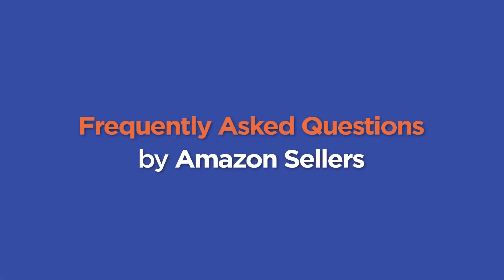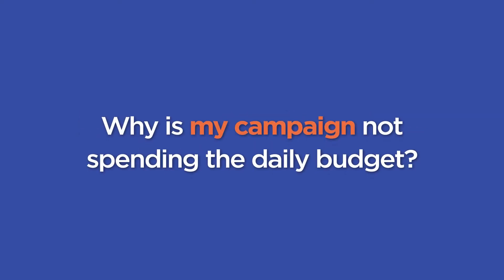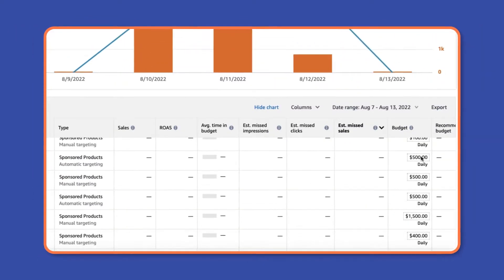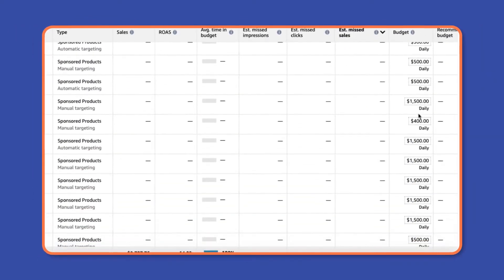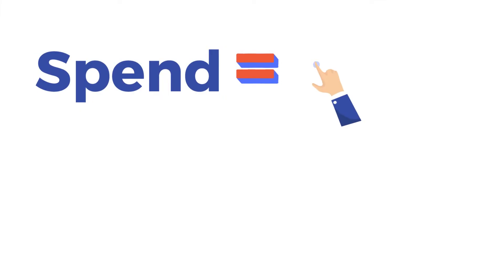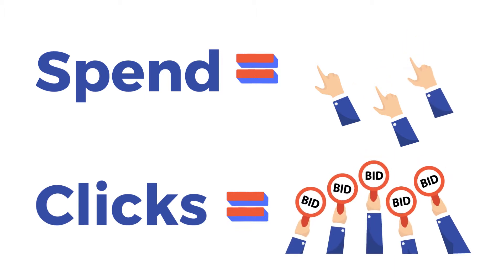Hi there, my name is Carolina. I am an Account Manager at AMZ Advisors and today I'm here to answer some frequently asked questions. The first one is: why is my campaign not spending the daily budget? The daily budget is the maximum a campaign can spend per day. Although we do have a daily budget, that does not necessarily mean we will spend that amount daily. The spend is related to the clicks, and getting clicks is related to our bids.